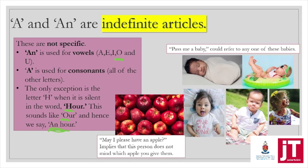May I please have an apple? It implies that this person does not mind which apple you give them. For example, say you're in a nursery working with small babies — you could say 'pass me a baby.' You don't care which baby. If you're saying 'pass me a baby,' you're not being specific. It's called an indefinite article because it's not definite exactly which specific noun you want.